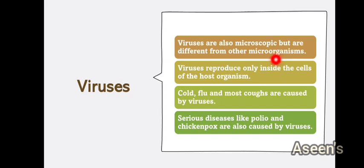Viruses reproduce only inside the cells of the host organism. A host is basically the organism inside which the virus is living or has attacked. When a virus attacks a person or animal, it will start to multiply only when it is inside the body. If it is outside the body in the open atmosphere, it will never multiply — it will act as if it is non-living. Only inside the body of an organism will it act as a living organism.